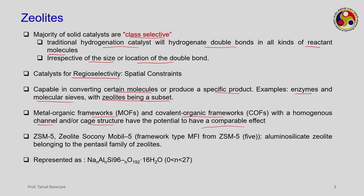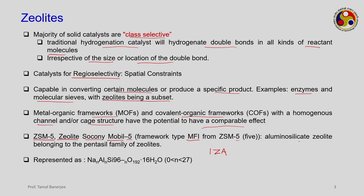Zeolites are given names — the names reflect the company which developed those synthetic zeolites. For example, ZSM-5 stands for Zeolite Socony Mobile, synthesized and patented by the Mobil company. The '5' refers to a framework type. The three-letter framework codes for zeolites are coined by the International Zeolite Association (IZA). ZSM-5 belongs to the framework type MFI, an arrangement of silica, aluminum, and oxygen atoms. These are called aluminosilicate zeolites belonging to the pentasil family of zeolites.